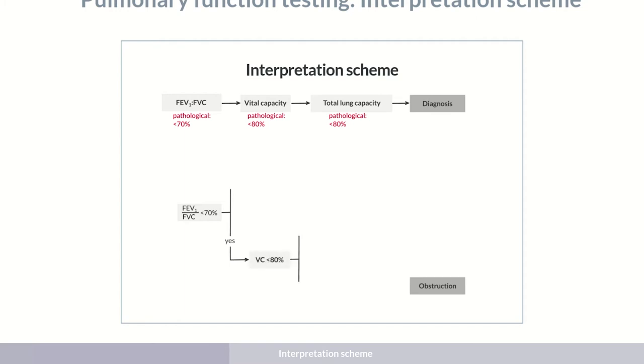Let's next look at the vital capacity. If the value is within the normal range, the lung volume is normal. In this case, the diagnosis is just obstruction.